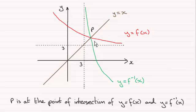Now as you can see from this sketch it's the point of intersection of both f of x and the inverse of f of x.